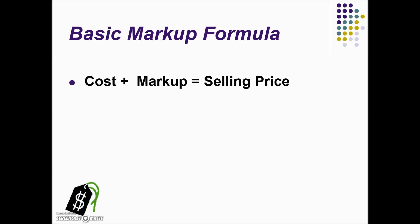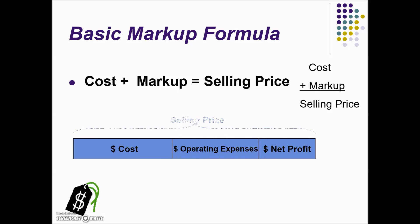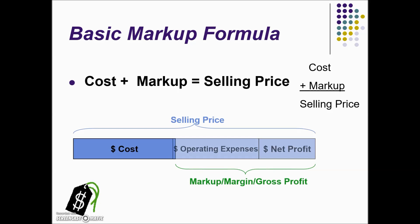Here's our formula for markup. It shows that the selling price is the sum of the cost and the markup. The combination of these items accounts for the selling price. The markup is the sum of our operating expenses and net profit.